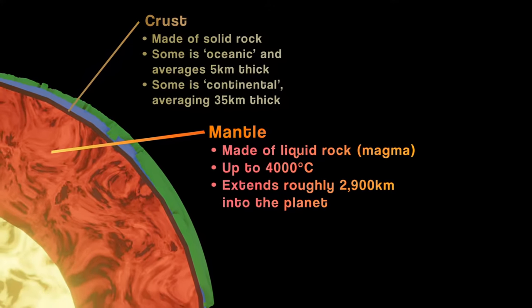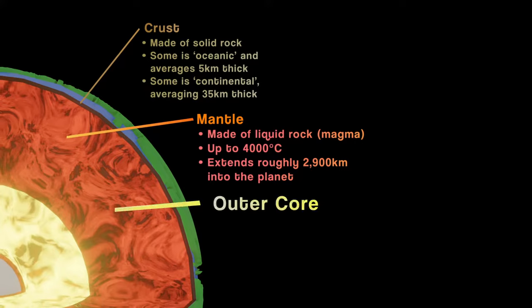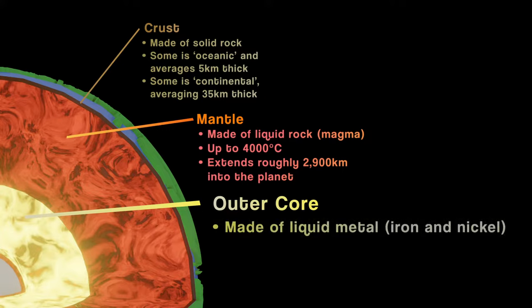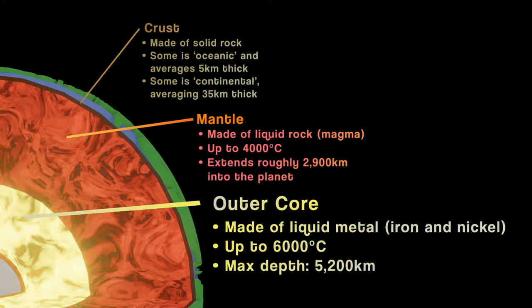Further in still, and we reach the outer core. Instead of rock, this layer is made of metal, mostly iron and nickel to be exact. The 6,000 degree temperatures here are hot enough to melt the metal down into liquid, and it goes down to a depth of roughly 5,200 kilometers.